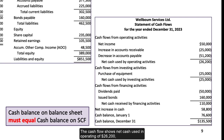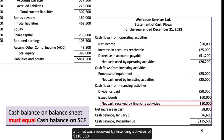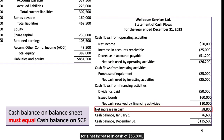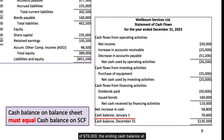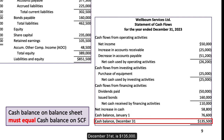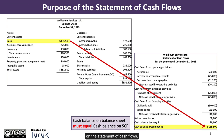The cash flow shows net cash used in operating activities of $26,200, net cash used by investing activities of $25,000, and net cash received by financing activities of $110,000, for a net increase in cash of $58,800. When added to the cash balance at the beginning of the year on January 1 of $76,000, the ending cash balance at December 31 is $135,000. It is very important to note that the cash balance on the balance sheet must equal the ending cash balance on the statement of cash flows.